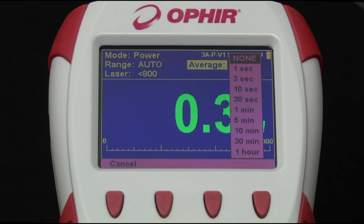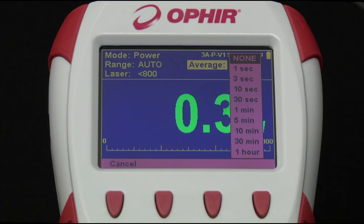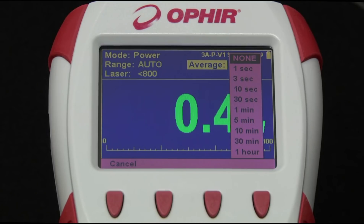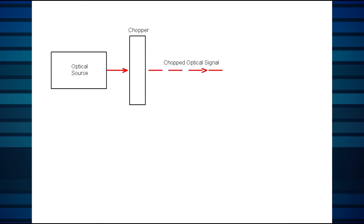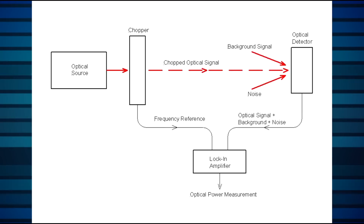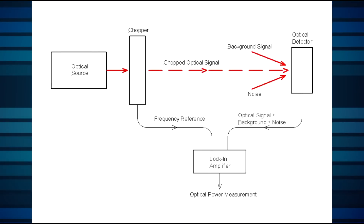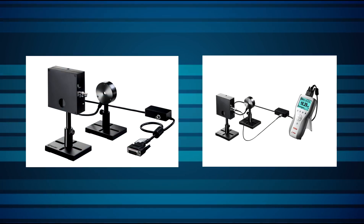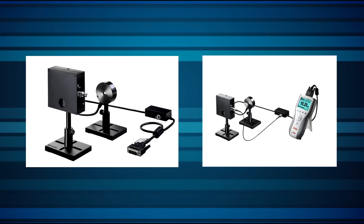For dealing with noise, the meter's average function displays the running average of the power reading over a selected time period instead of the actual real-time reading. This can help smooth out jumpiness in readings of an unstable beam by averaging out random noise. Measuring below the noise floor is sometimes made possible by using a lock-in amplifier. The beam is modulated at a specific frequency by a chopper, and the lock-in amplifier essentially ignores any signal not modulated at that specific frequency. Noise can be reduced with this technique by several orders of magnitude. Ophir has a family of sensors called the RM9 family that uses this method to measure powers as low as the femtowatt range.